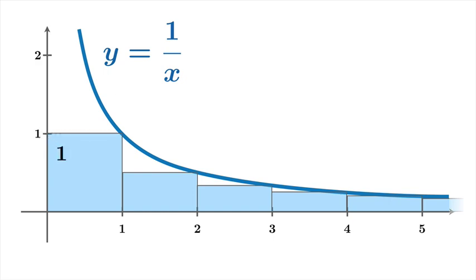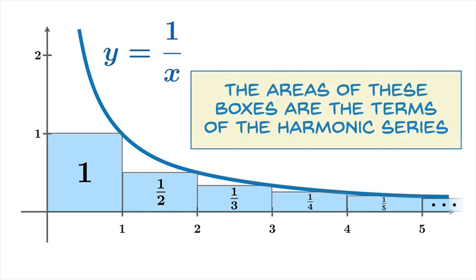So this function value is one, which means this first box has area one. This function value is 1/2, so this box has area 1/2 and so on. We can just determine that this sequence of boxes have these areas of these boxes correspond to the terms of the harmonic series. So we have this way of picturing the harmonic series.